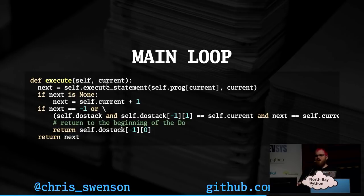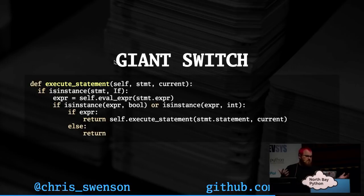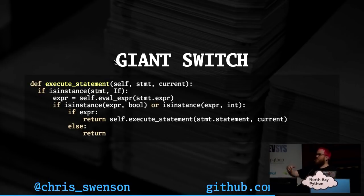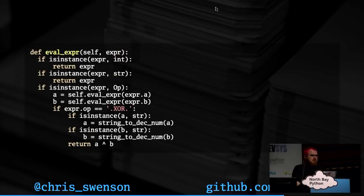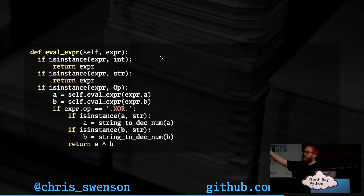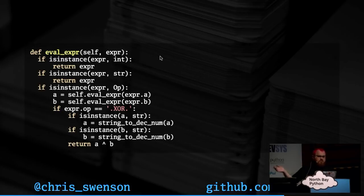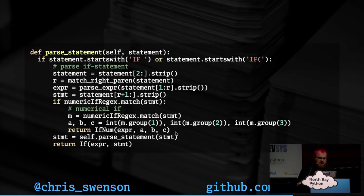If you were writing a compiler for this, those are all determined statically, so you wouldn't need a stack — you could do it all at compile time. The execute statement is just a giant switch: if it's an if, execute it as an if, grab the expression, evaluate it as a boolean, and run things. It checks all the other kinds of statements it could be and just starts executing them. You have to evaluate expressions — if it needs to be a boolean it does that, checks if it's a Python string or integer and returns those. Otherwise it might be an XOR, an equal, a not, an add, and so on.